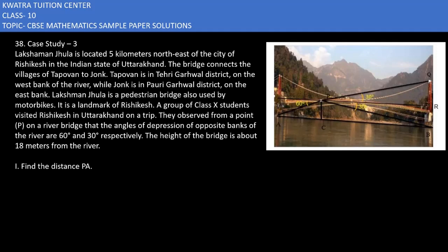Let's start with question number 38, the third case study. Laxman Jhula is located 5 kilometers northeast of the city of Rishikesh in the Indian state of Uttarakhand. The bridge connects the villages of Tapuwan to Jong. Tapuwan is in Tehri Garhwal district on the west bank of the river, while Jong is in Pauri Garhwal district on the east bank. Laxman Jhula is a pedestrian bridge also used by motorbikes, and it is a landmark of Rishikesh. A group of class 10 students visiting Rishikesh observed from a point on the river bridge that the angles of depression of the opposite banks of the river are 60° and 30° respectively. The height of the bridge is about 18 meters from the river.